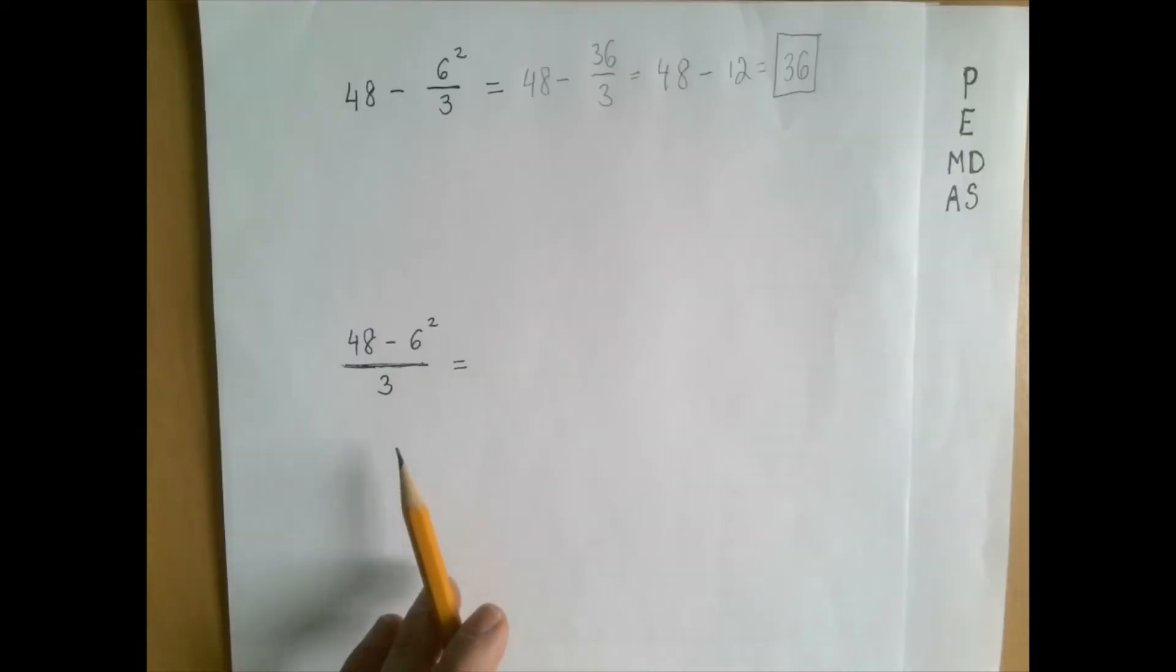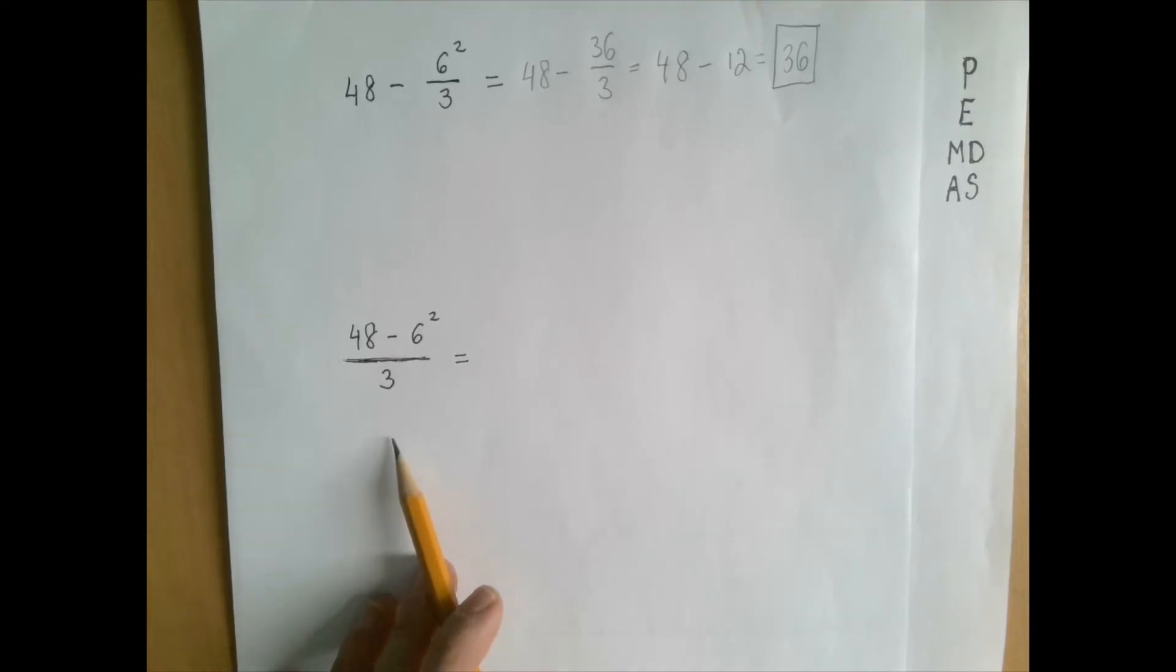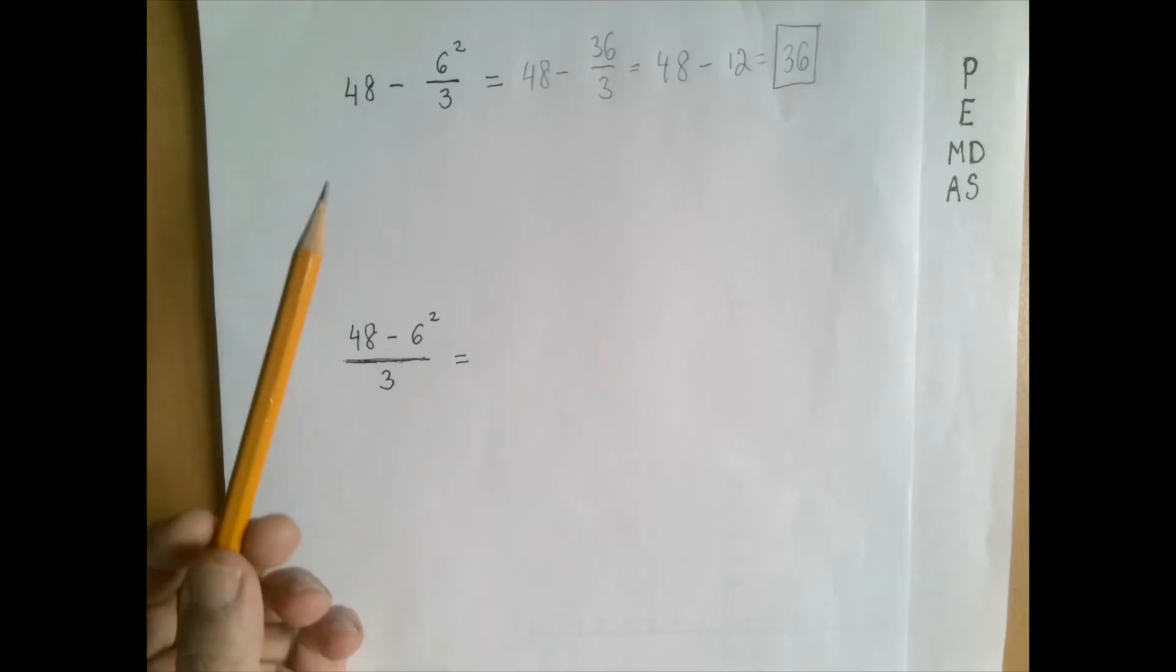This is where things get a little trickier. First of all, there is no parenthesis in sight, so theoretically we should follow the same order of operations. However, intuitively we all know to first square 6.